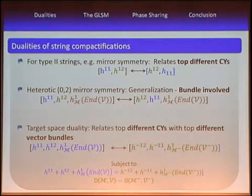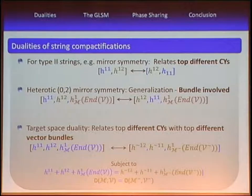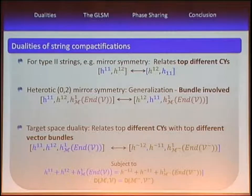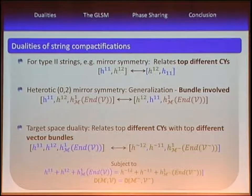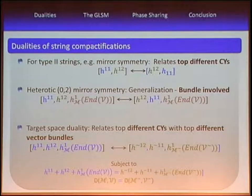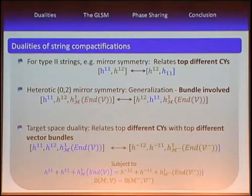What we investigate in our paper is target space duality. Here, both your Hodge numbers change and the number of bundle deformations changes, but at the end you get the same moduli space — the same number of deformations of the full theory. We propose a procedure to generate from almost any given (0,2) model a different (0,2) model — from one Calabi-Yau with vector bundle, a different Calabi-Yau with a different vector bundle — that satisfies this relation and has the same chiral spectrum.